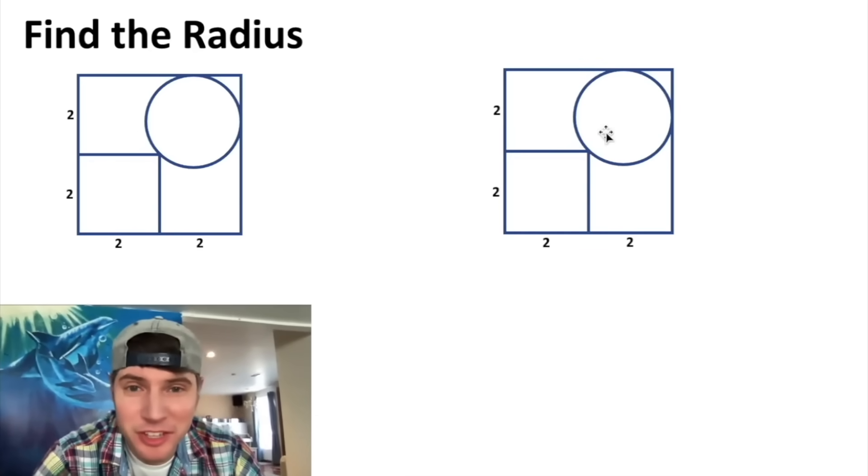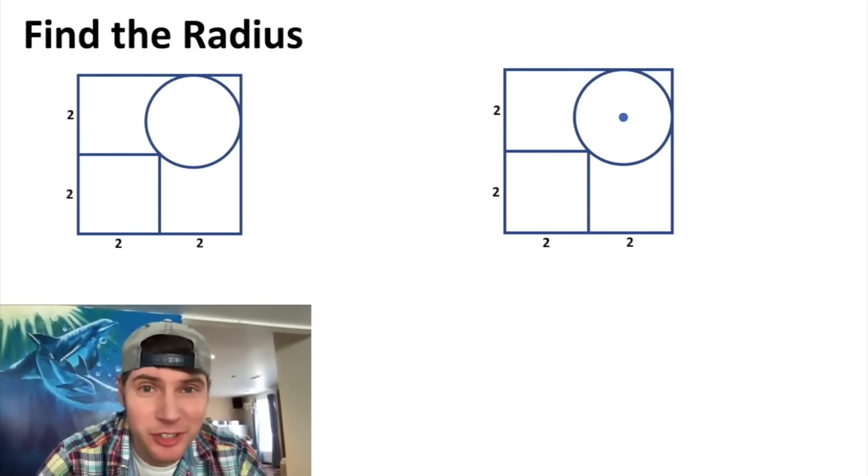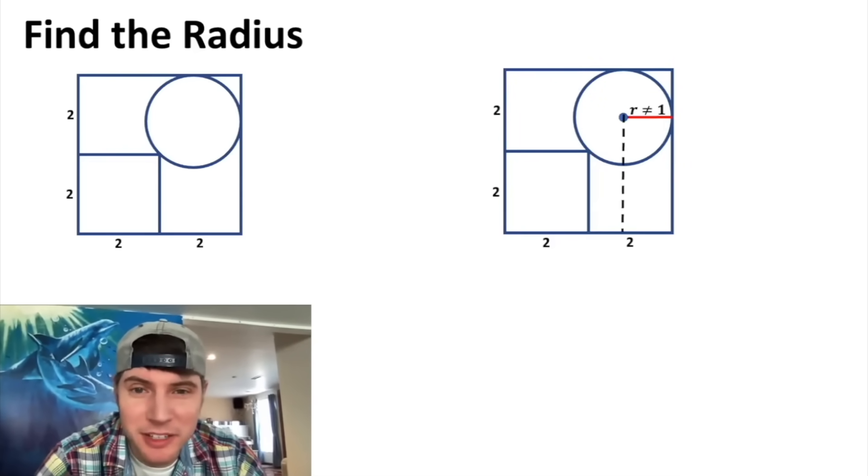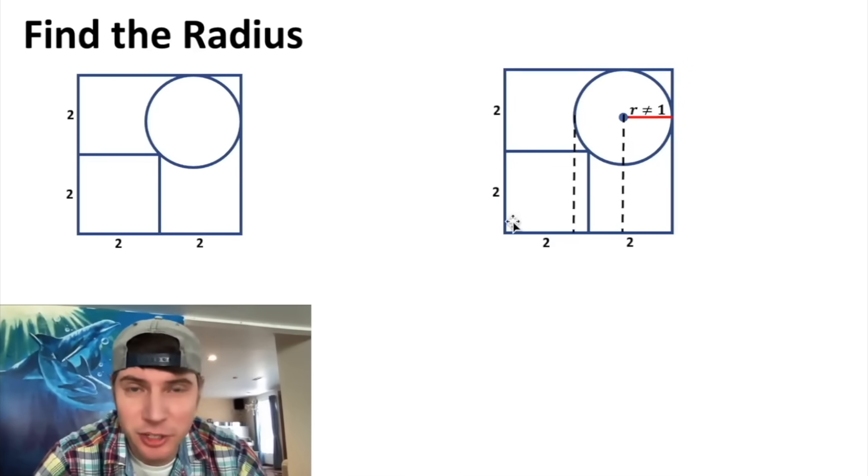Hey guys, so we want to solve the radius of this circle. First let's find the center of the circle, and this right here is going to be the radius. I first thought maybe it equals one, but it doesn't because if we bring this down, that's not in the middle here because the edge of the circle is not in the middle either.